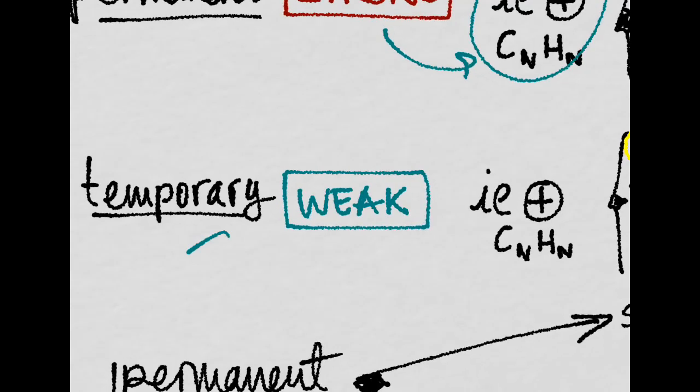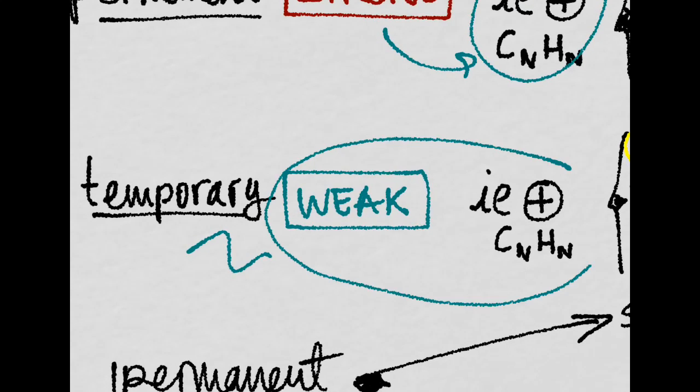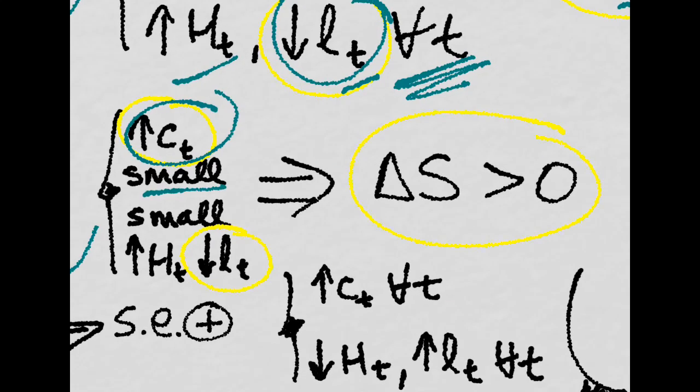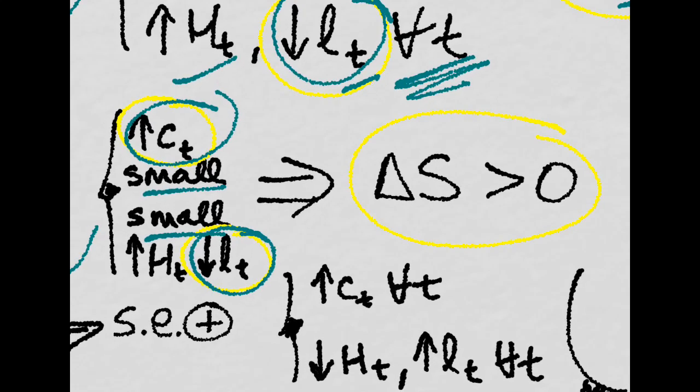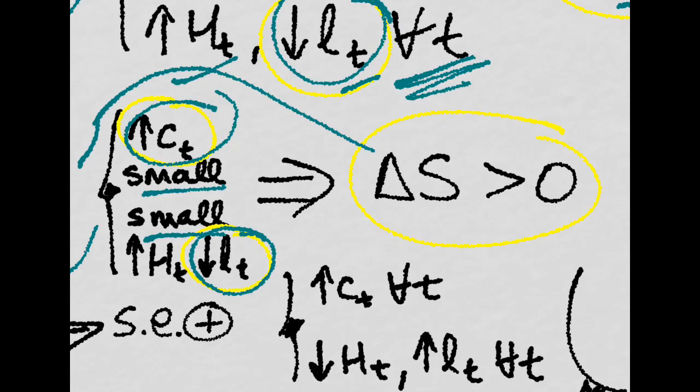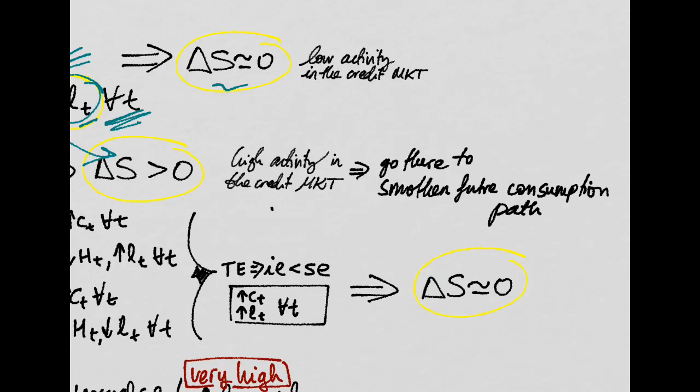Instead, if the shock was temporary, then the income effect will be weak. Because, yes, you have an increase in consumption at this period, which is small. And you also have a decrease in leisure in this period, which is also small. And they are so small that basically all the increase in income, you're saving it for the future. So, there is a high activity in the credit market and people basically go there because they know it's a temporary shock and they want to smoothen their consumption path in the future. That is why they save more and buy more bonds in the credit market.